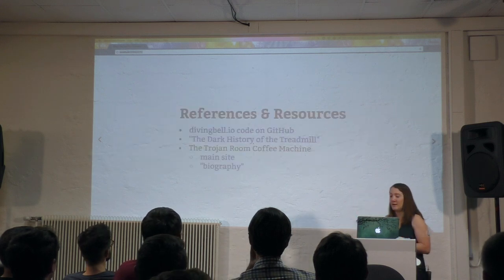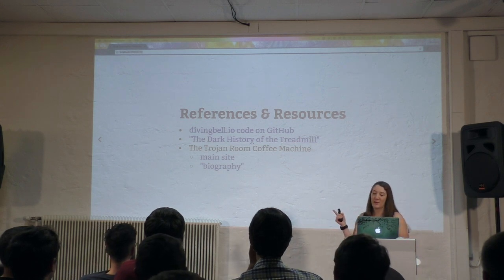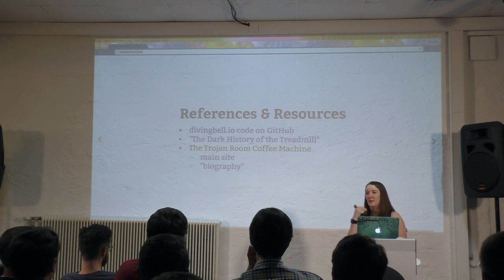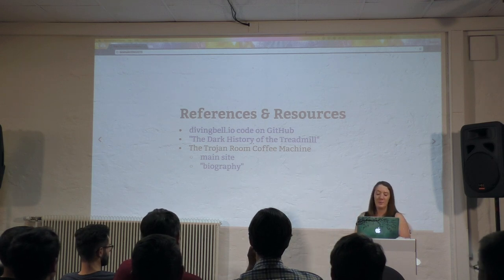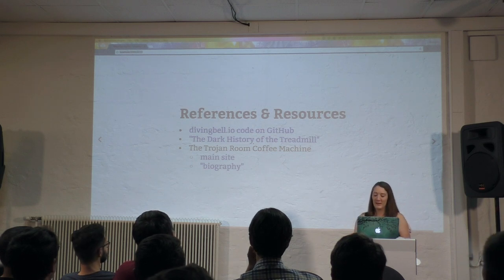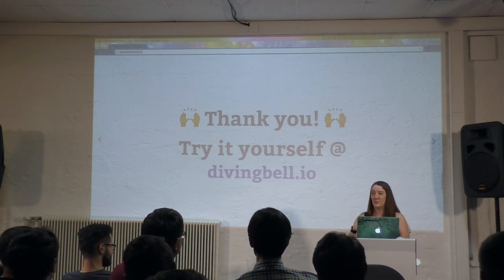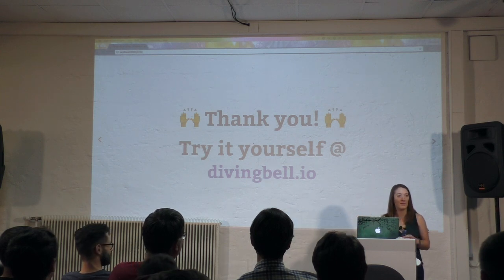We have a contrast here: treadmills started as an instrument of punishment in prisons and are now something we voluntarily use in our free time. Webcams started as this amazing invention to improve human caffeine-system efficiency and are now something many of us disable by taping over them. This brings us back to the idea that technologies have histories and contexts, but those histories and contexts are not definitive — we shouldn't let them be. We should broaden our horizons in how we think about the kinds of components that can go into what we build. The app is at divingmill.io — it takes a very zen mindset to spell long things, and be careful your face is well lit.